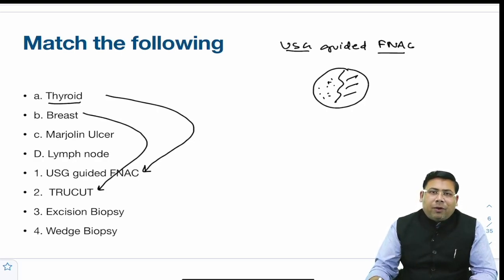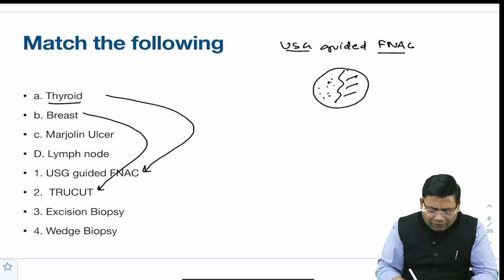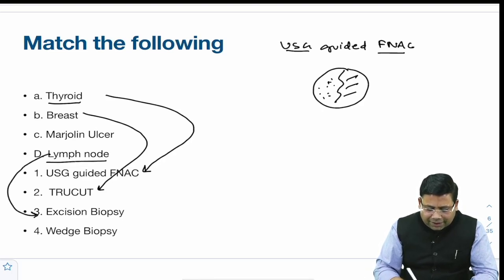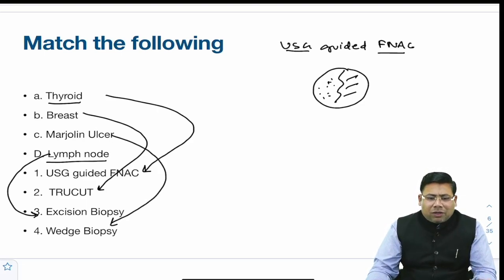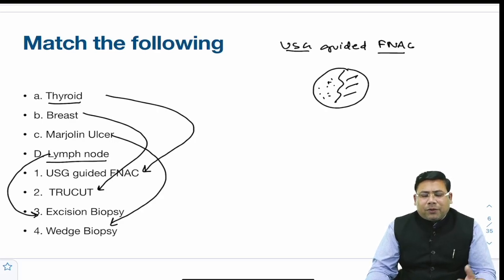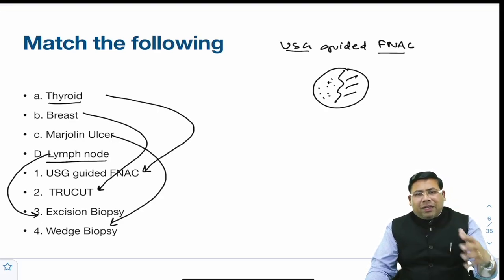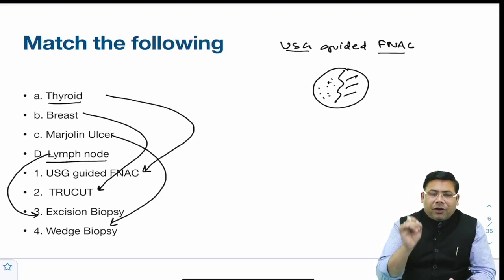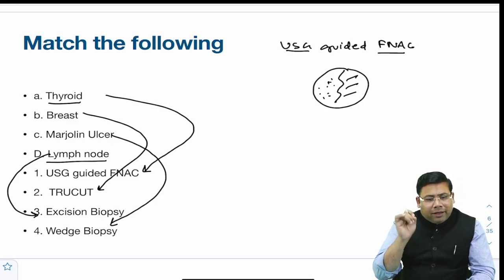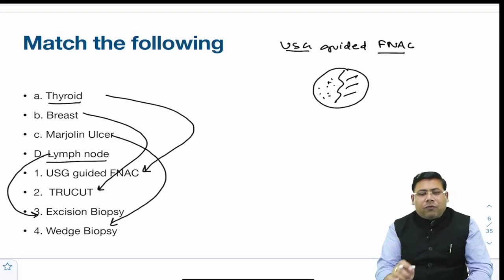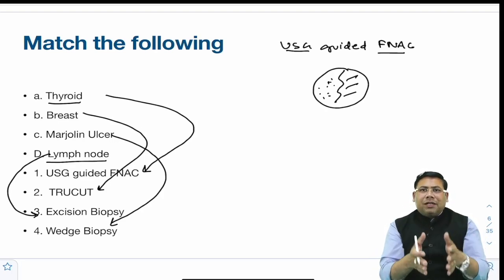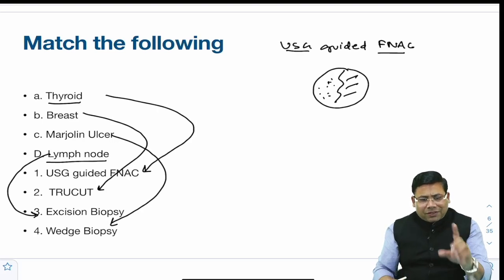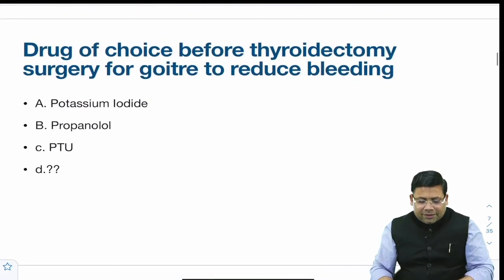For breast, the gold standard is true-cut biopsy. For lymph nodes, excision biopsy is used. For Marjolin's ulcer or sarcoma, we go for wedge biopsy or shave biopsy to confirm, and then plan excision. So: thyroid — USD-guided FNAC; breast — true-cut biopsy; lymph nodes — excision biopsy; Marjolin's ulcer — wedge or shave biopsy.